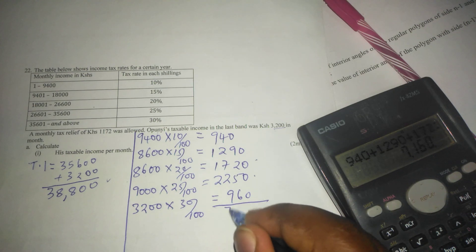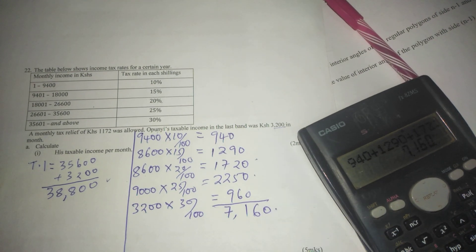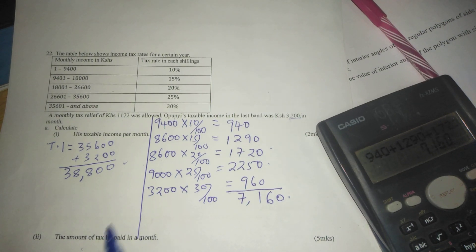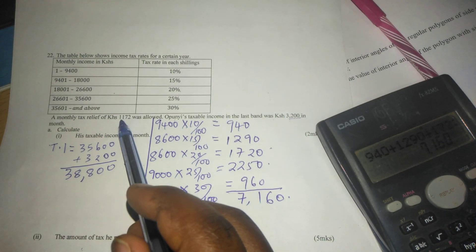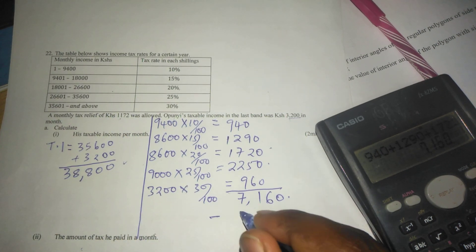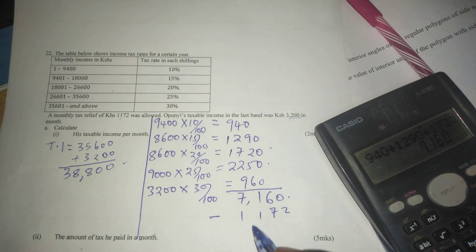We get 7,160 shillings. This is the tax which is payable to this guy. But now he's given a relief of 1,172. So we subtract relief from this amount so that we may know the net salary that he pays in a month.